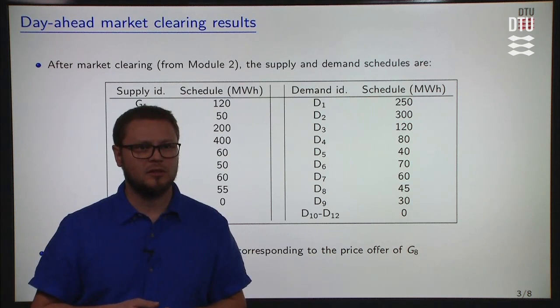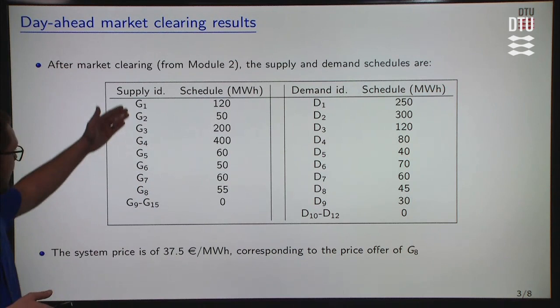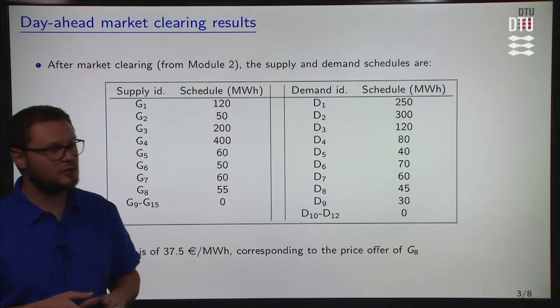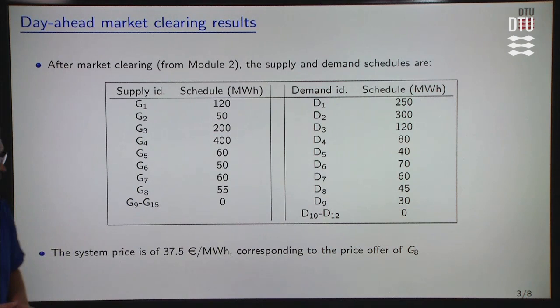Let's use the day-ahead market clearing results from Module 2 as a basis for understanding how the balancing market is going to work. We have all the supply offers being scheduled either fully or partly, and all the demand offers being scheduled — here all fully. G9 to G15 are out of the market on the supply side, D10 to D12 are out of the market on the demand side. The system price lambda_s is 37.5 euro per megawatt hour.